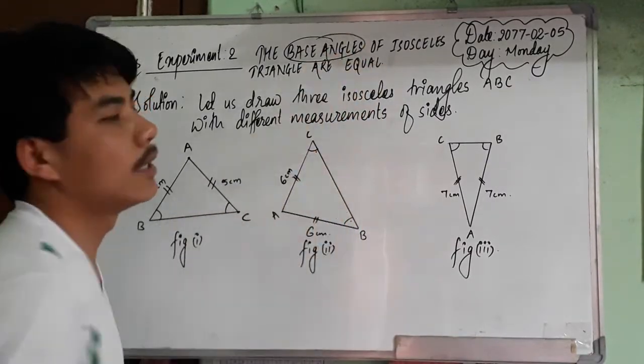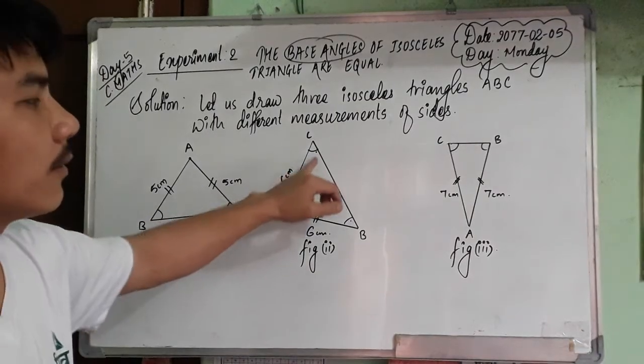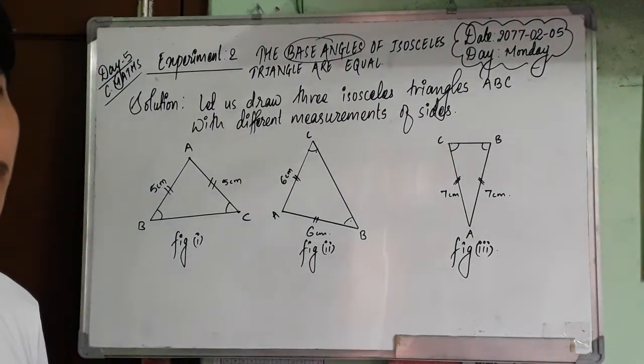The base angles of isosceles triangles are equal. These two values are equal and these two values are equal. We will prove that.